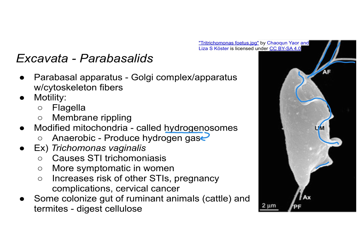One example of a parabasalid is Trichomonas vaginalis, which causes a sexually transmitted infection known as trichomoniasis. It's more symptomatic in women, although males can get it and pass it on to their partners. The presence of Trichomonas vaginalis can increase a person's risk of getting other STIs, and it can also lead to pregnancy complications and cervical cancer.